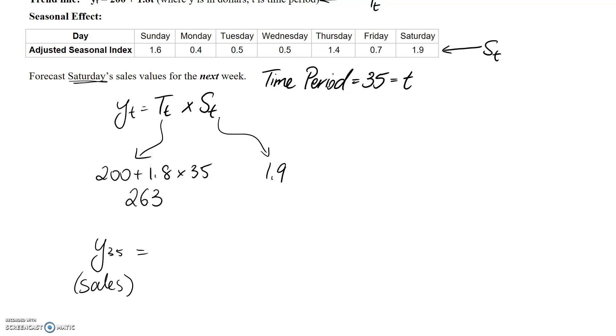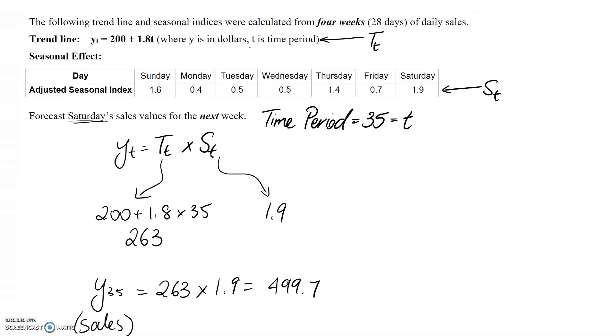It equals 263 × 1.9, which comes out to 499.7 dollars.